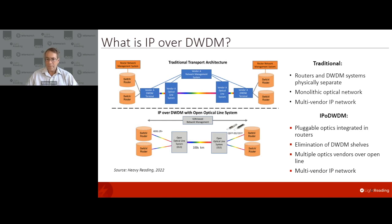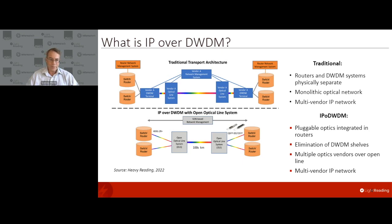Everybody's kind of in a different spot in terms of where they are with looking at the integration of optics, so I'm going to start at a very high level. What exactly is IP over DWDM? It's a different architecture than what has traditionally been deployed in networks. The graphic on this slide hopefully depicts the differences between a traditional optical architecture and an IP over DWDM network.